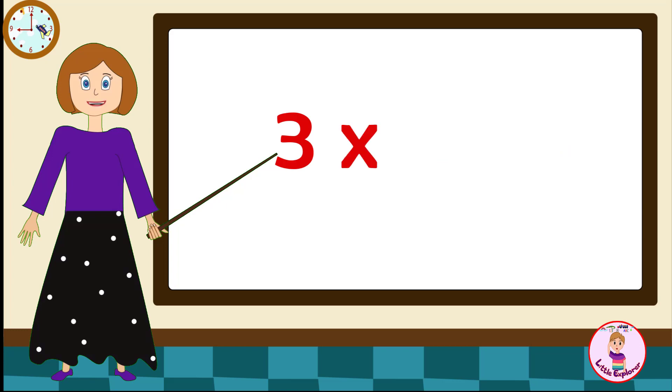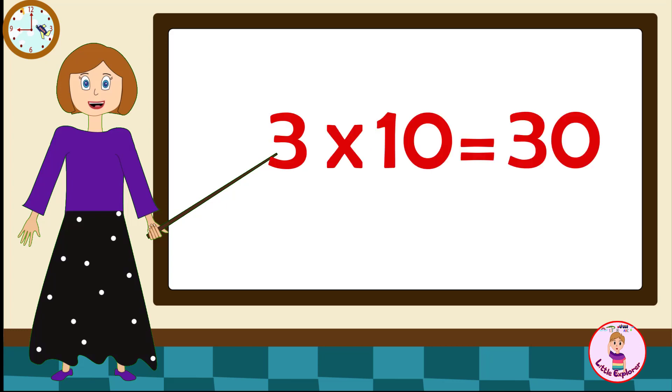Three fives are fifteen. Three sixes are eighteen. Three sevens are twenty-one. Three eights are twenty-four. Three nines are twenty-seven. Three tens are thirty.